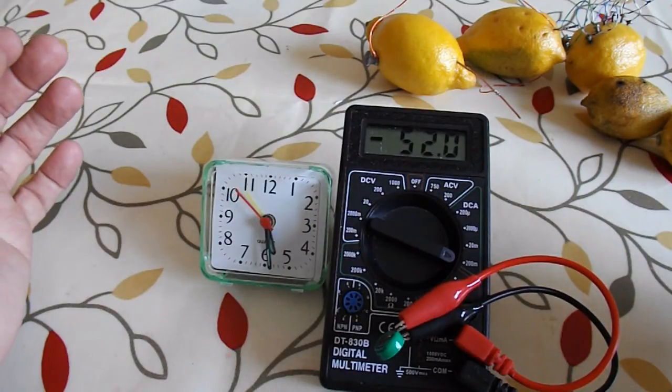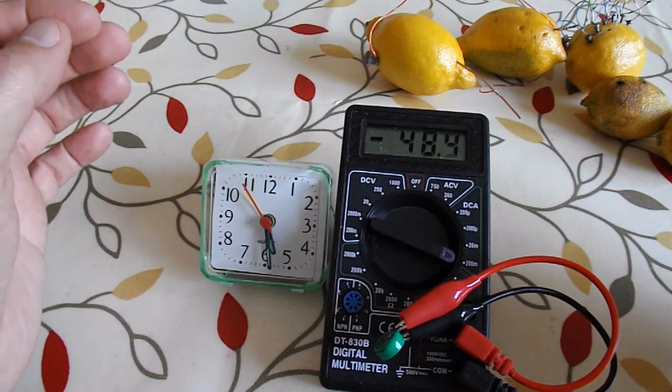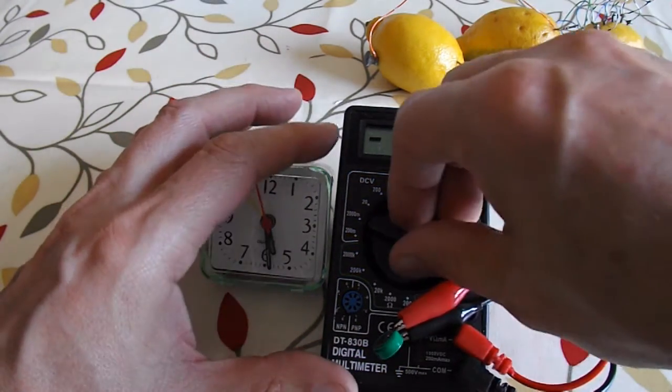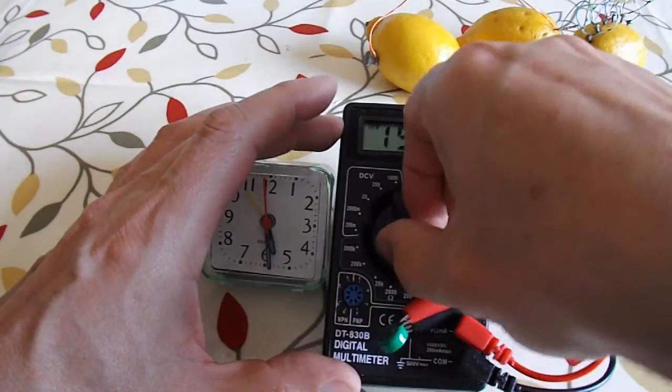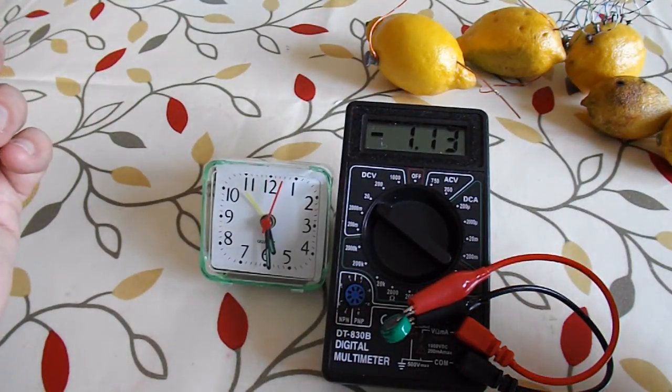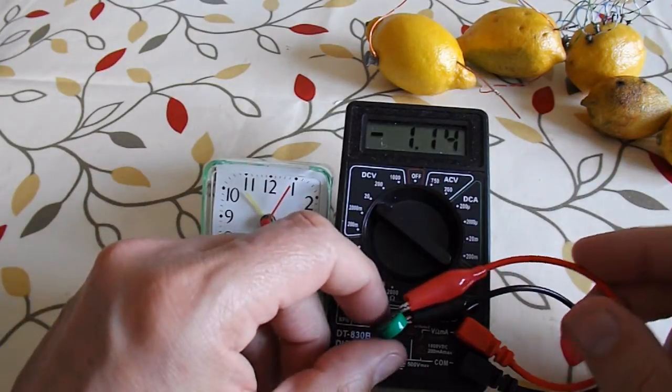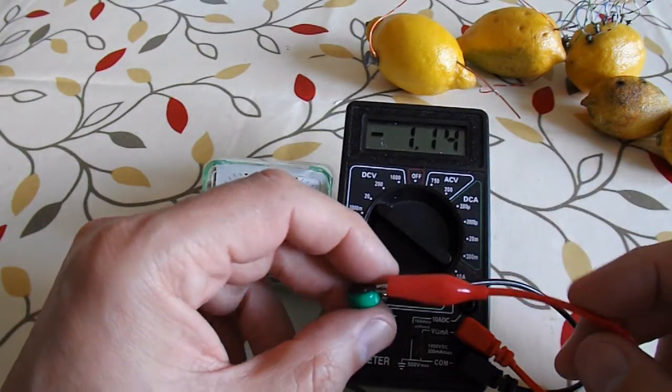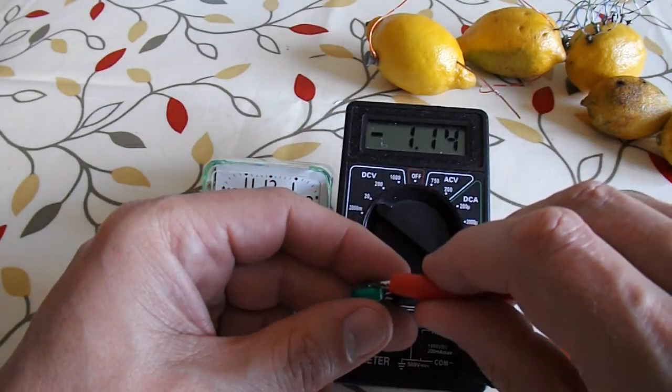That's on the amp scale just to see what's happening and it's dropping away rapidly isn't it? Right, back onto the volts. Well just measuring the amps draw has knocked it back quite significantly, gone down to 1.14.